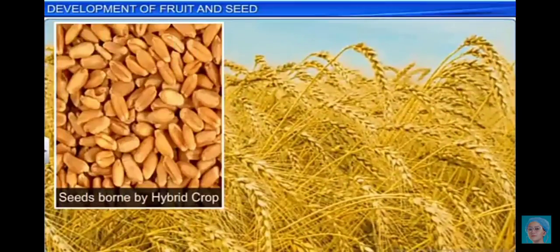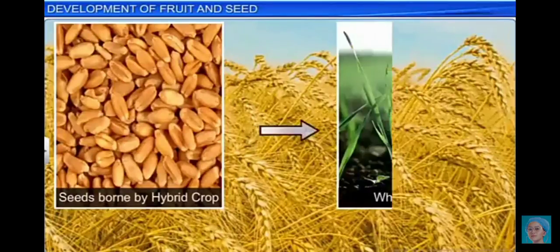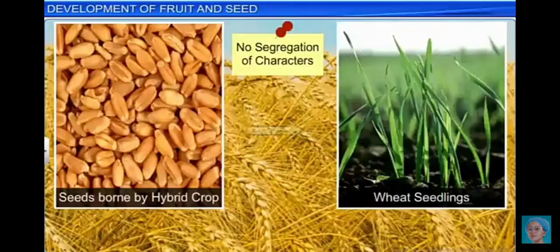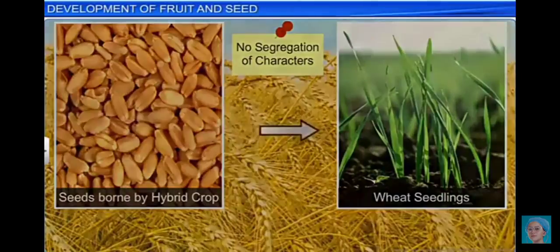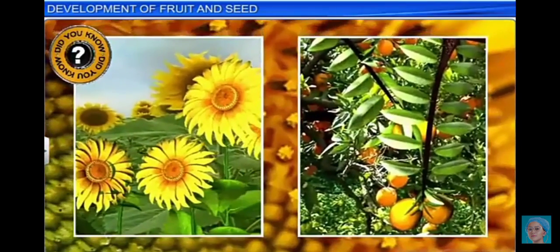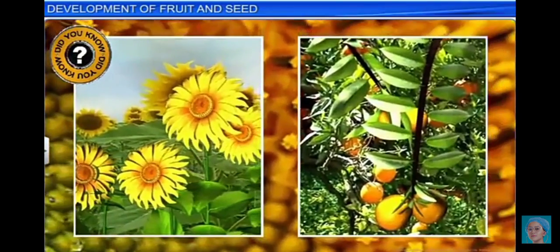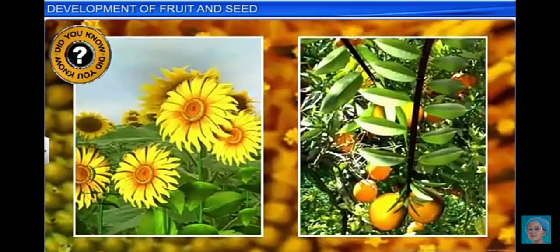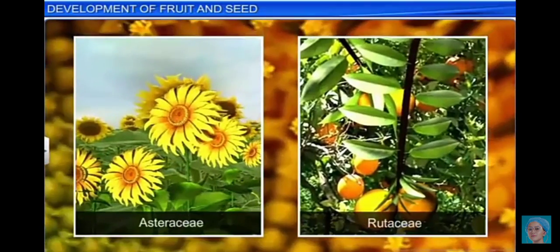This will thereby eliminate the need to purchase hybrid seeds every year, as the seedlings produced by the apomict will resemble their parents genetically. Plants such as grasses and those belonging to the family Asteraceae and Rutaceae are common examples of apomixis.